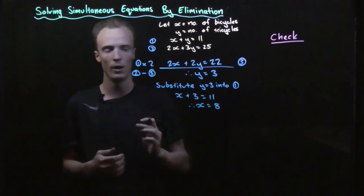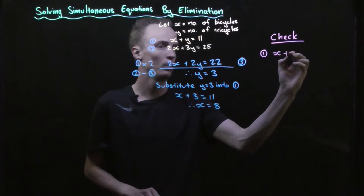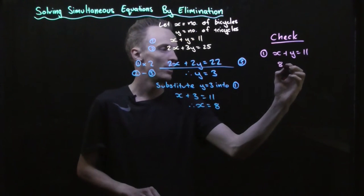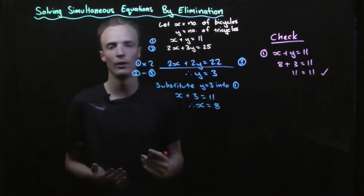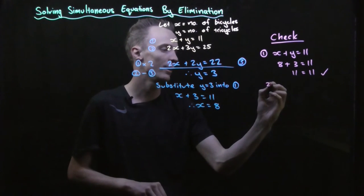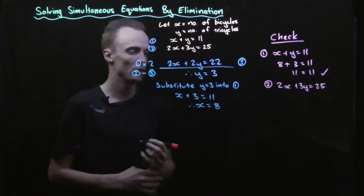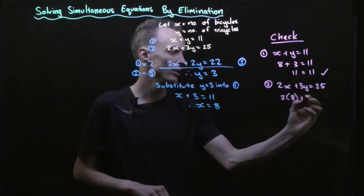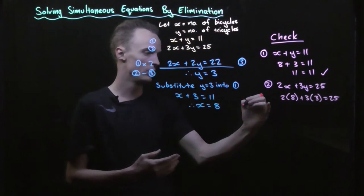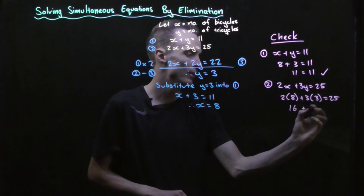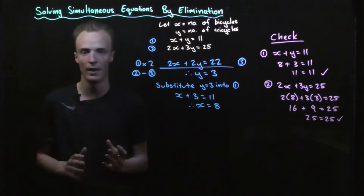To check, we substitute x equals 8 and y equals 3 into both equations. Into equation 1: x plus y equals 11 — our x value of 8 plus y value of 3 equals 11. 8 plus 3 does equal 11, so it balances. Into equation 2: 2x plus 3y equals 25. 2 times 8 plus 3 times 3 equals 16 plus 9, which equals 25. So we've found a solution that balances for both equations.